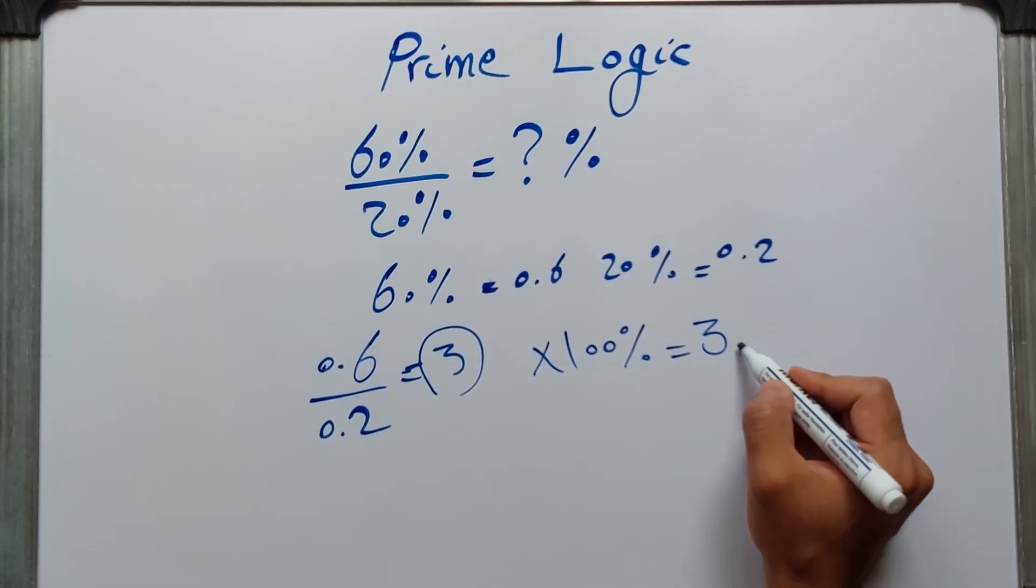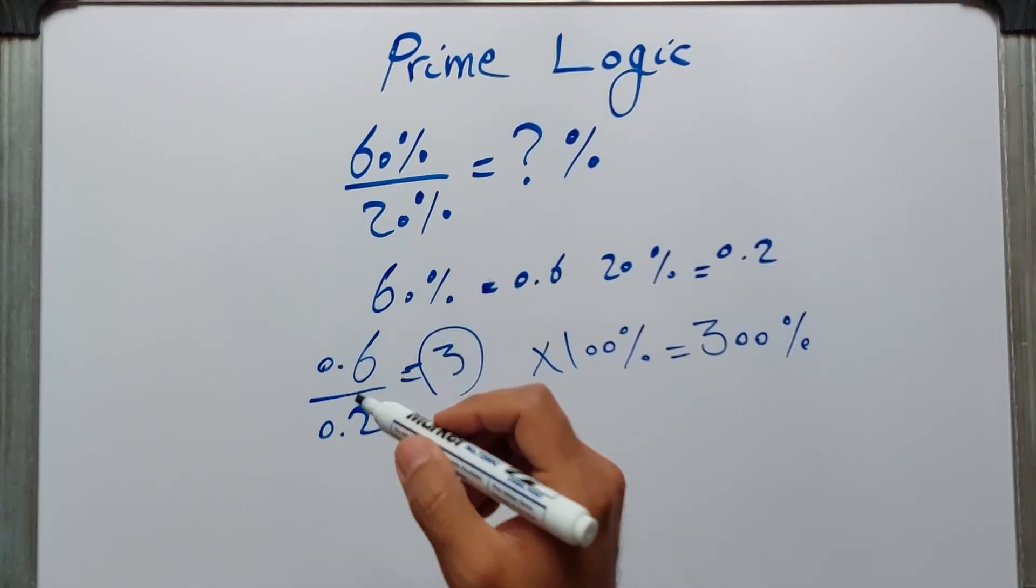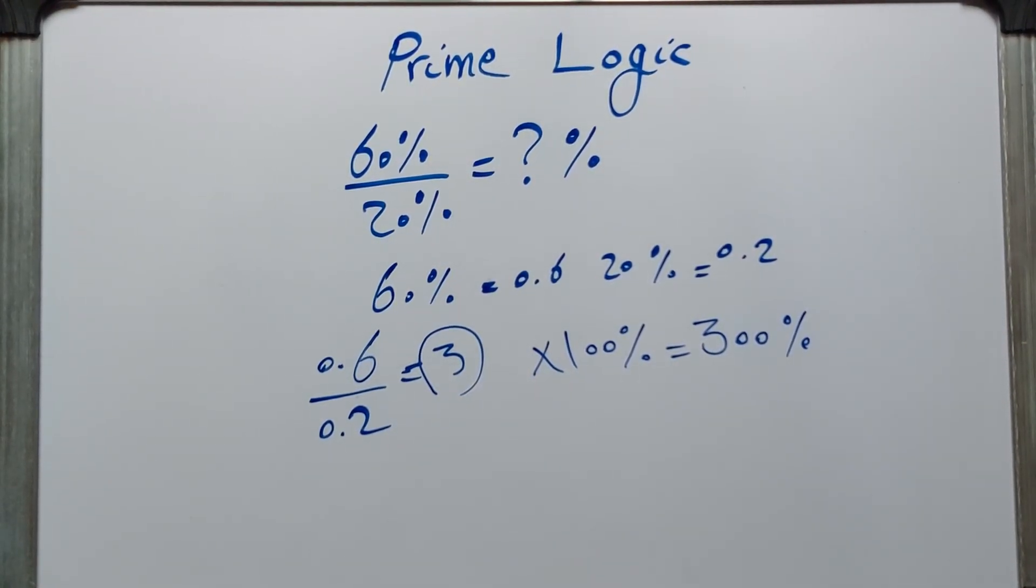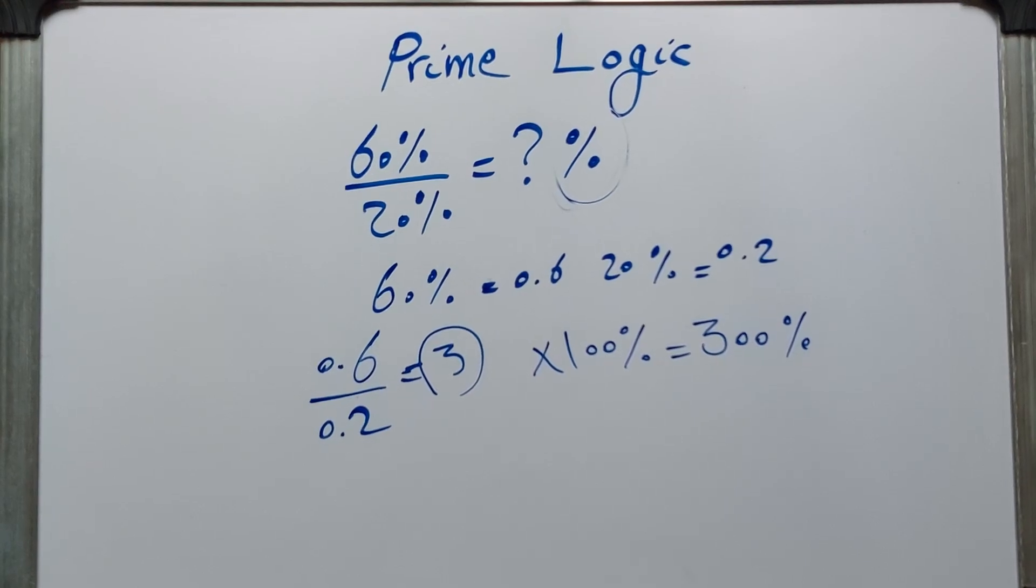So the real answer and the only correct answer is 300%. So 60% divided by 20% is 300%. That's because of this percentage sign in the question. So now that you've mastered simple division and operations on percentages, I want to give you a bonus challenge.